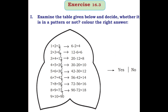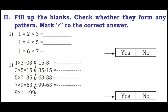Second main: Fill up the blanks and check whether they form any pattern. First one: 1×2×3=6, 1×4=4, 4×5=20, 1×6=6, 6×7=42. The differences are 20 minus 6 is 14, 42 minus 20 is 22 — not equal, so this is not in a pattern. Answer: No. Also check 6 plus 14 is 20, but 20 plus 14 is 34, not 42. So this is not a pattern.